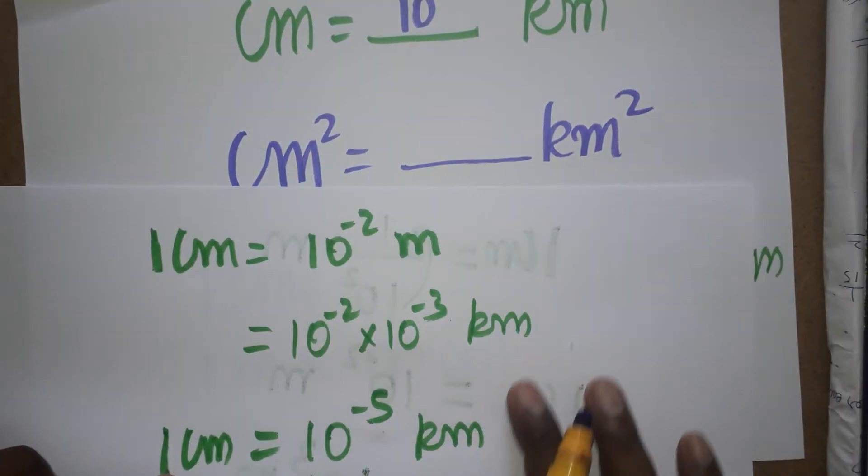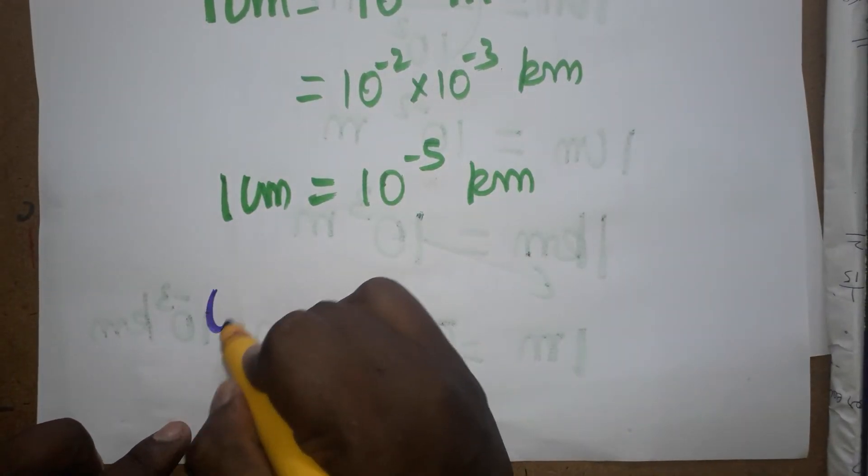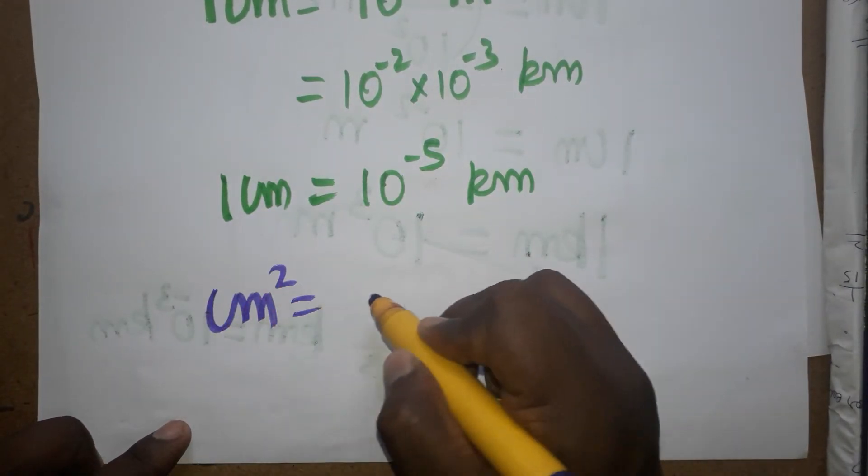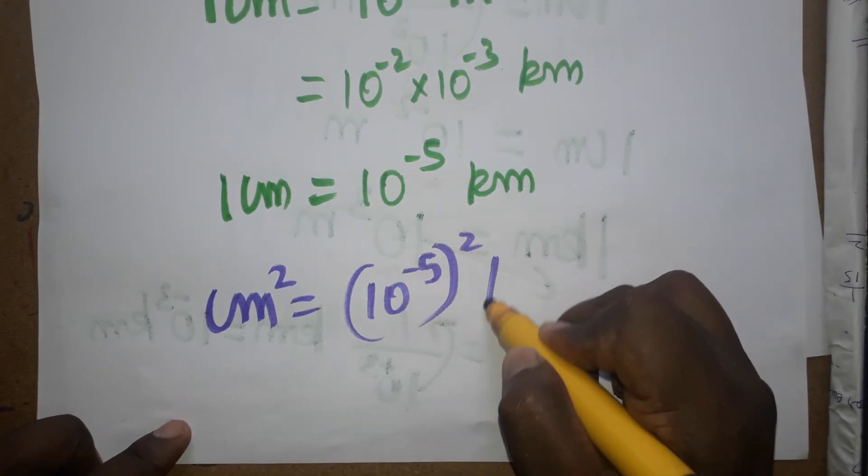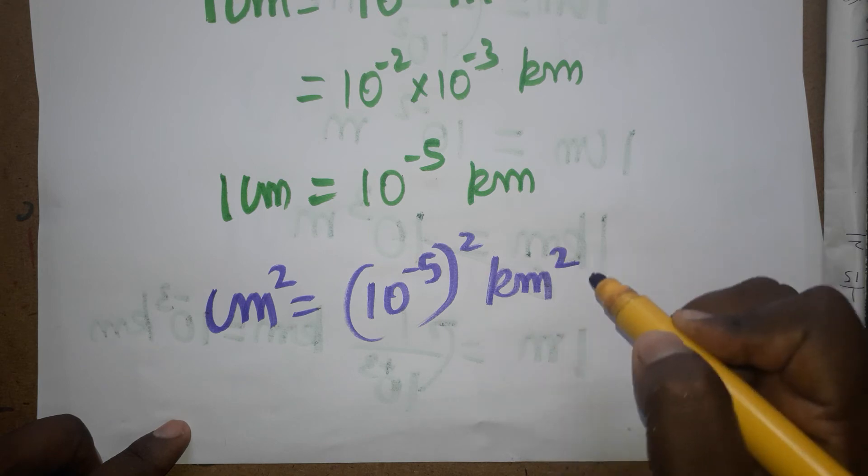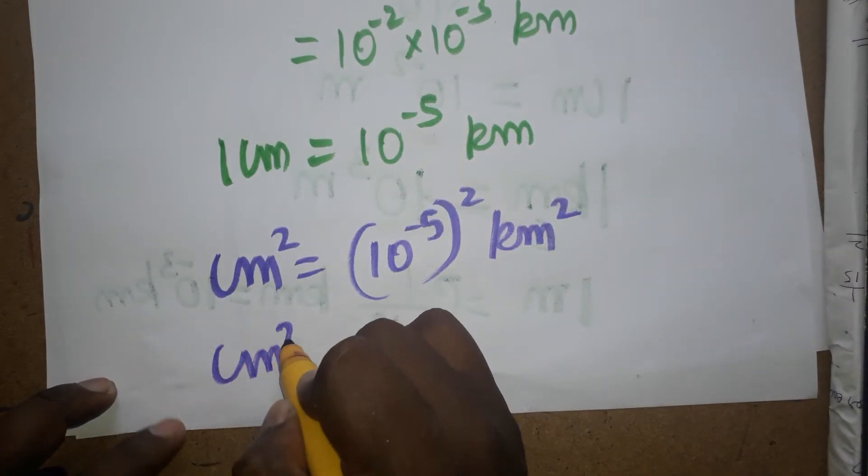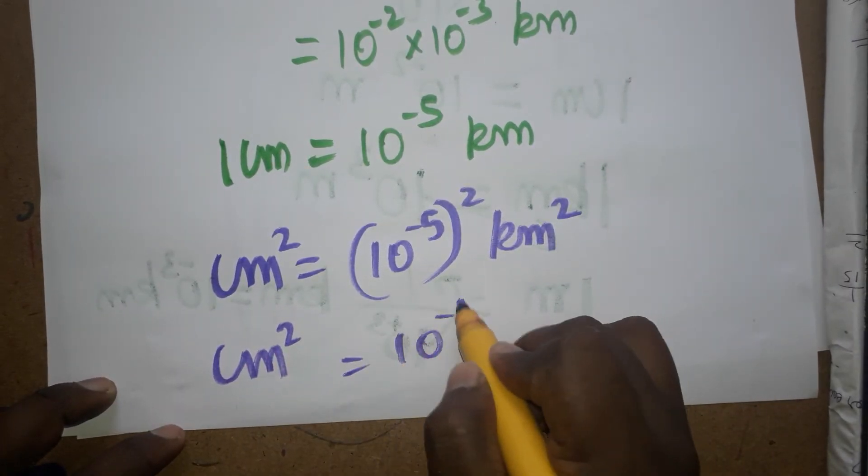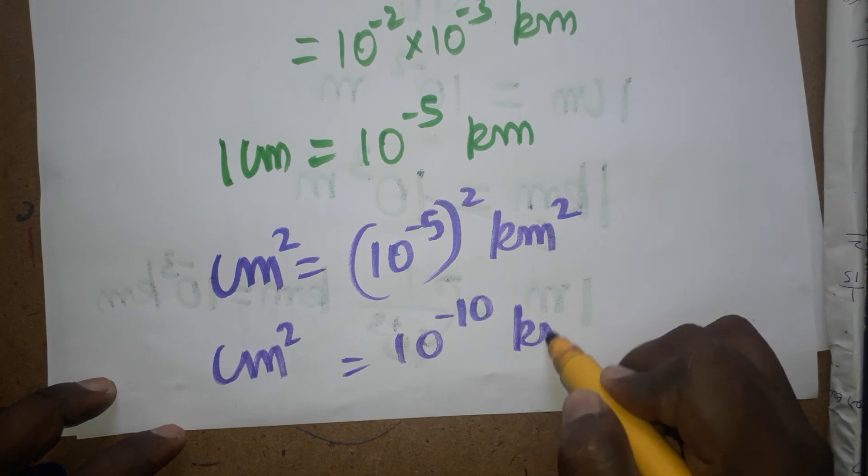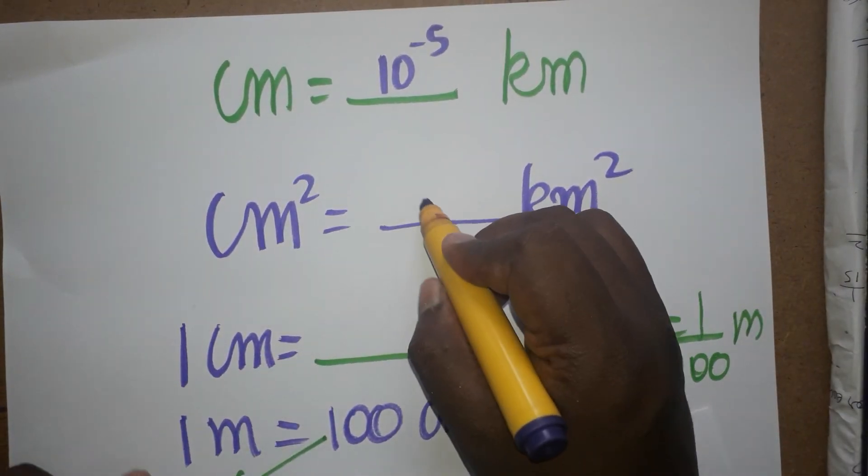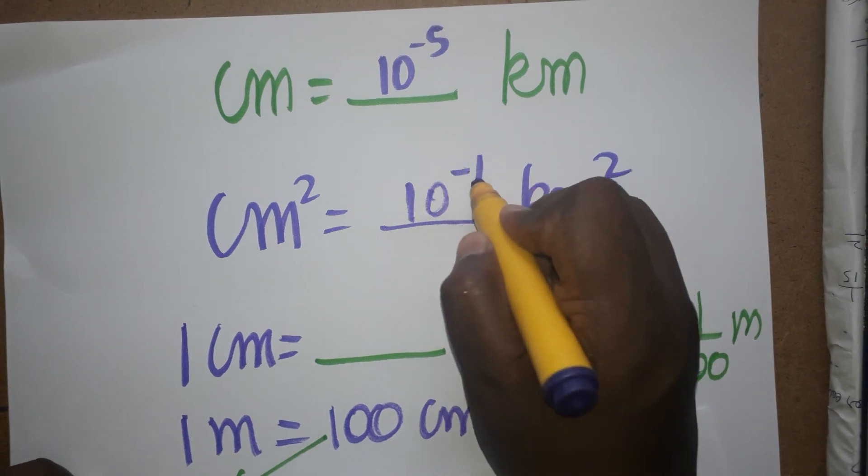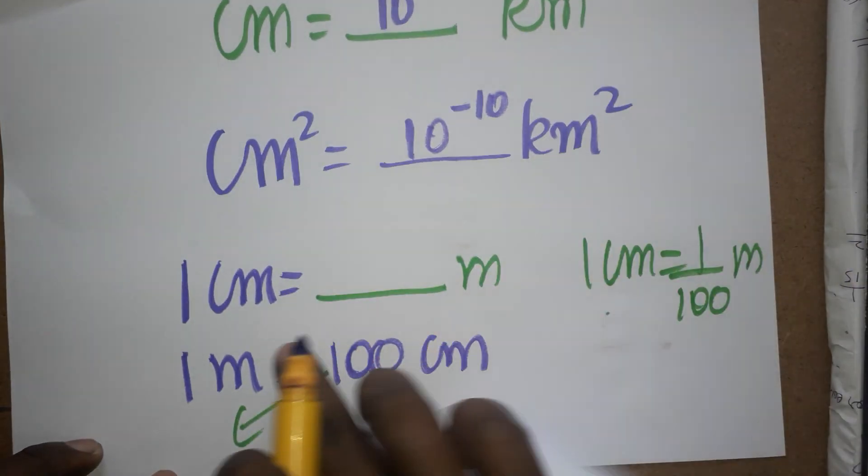Now for square units. So 1 cm is 10 power minus 5 km and 1 cm² is 10 power minus 10 km². We already found centimeter to meter is 10 power minus 2 meter.